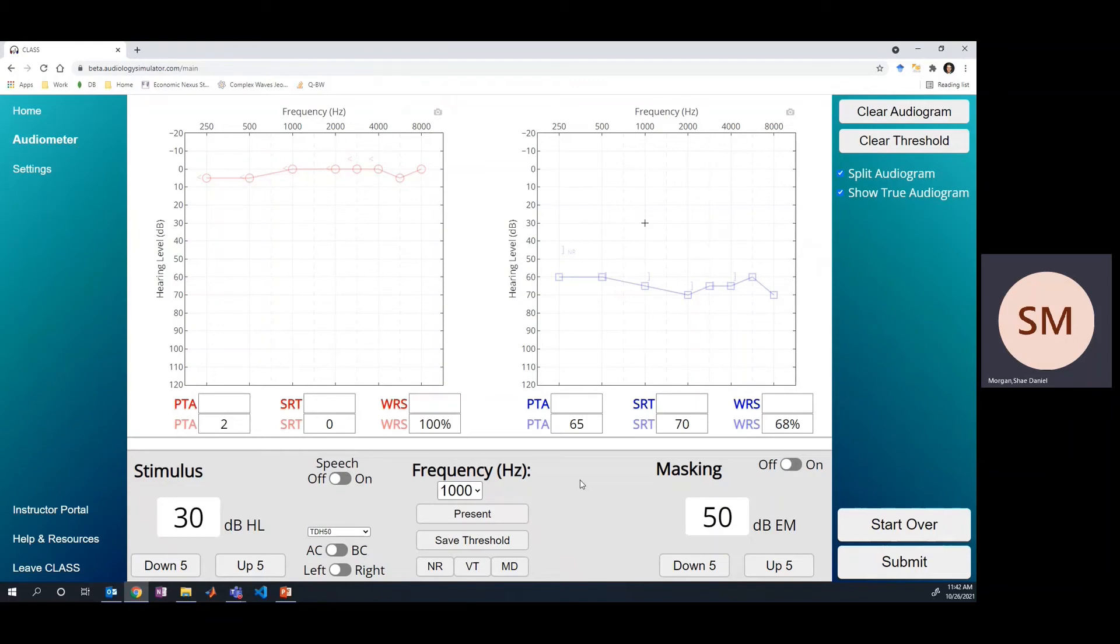We're going to go ahead and just present a stimulus here at 30 dB HL, and then we'll talk about what's happening. I present my stimulus and I don't get a response - there was no flashing light on this bar, which means that the level of this stimulus wasn't heard by the test or the non-test ear.